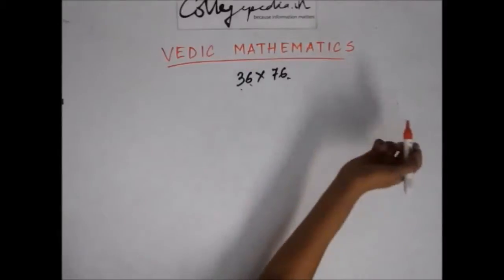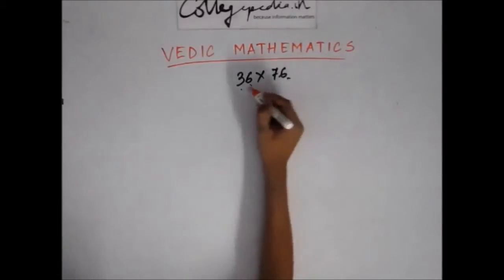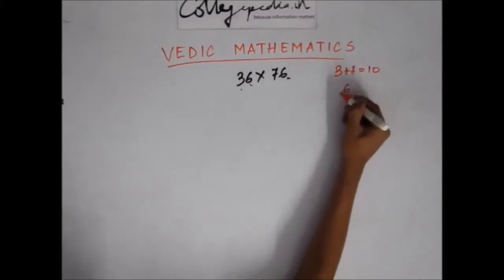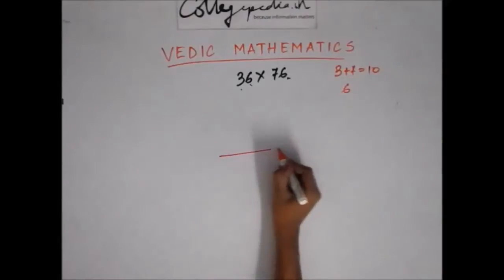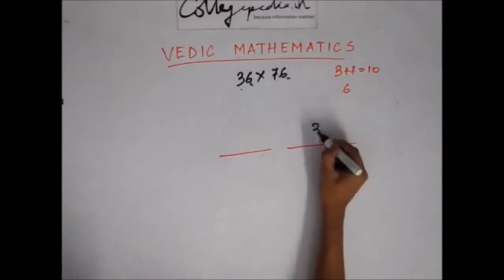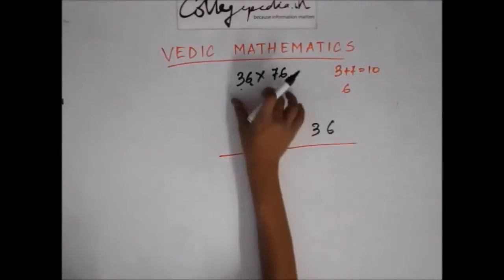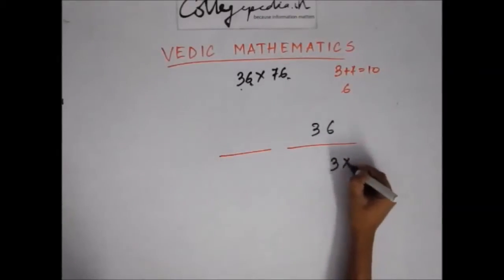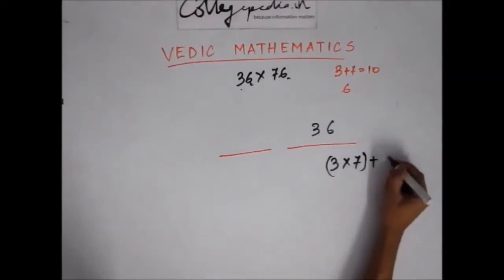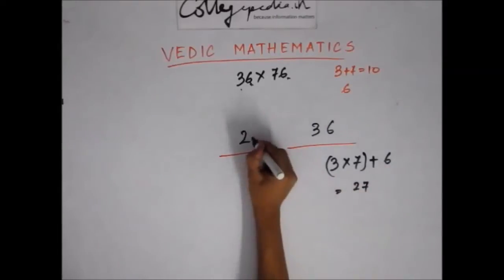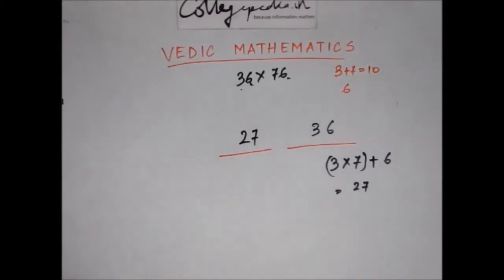Let's recap. We're multiplying two numbers whose last digit is common and whose first digits add up to 10. The answer lies in two parts. The second part is the product of the last digits — 36 in this case. For the first part, multiply the first digits and add the common digit: 3 × 7 = 21, plus 6 gives 27. So the answer is 2736. I hope you've got this trick clearly — thank you!